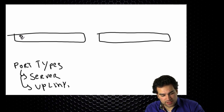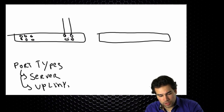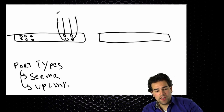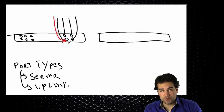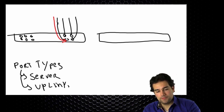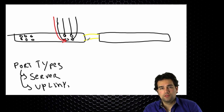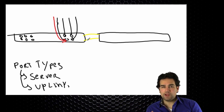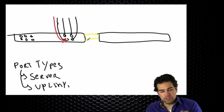I have ports that are statically assigned as either a server or an uplink port. Let's say I have four uplink ports going towards my network. The first rule is: when I see a packet coming into my system from an uplink port, it will never go out on another uplink port. I will never be a transit switch.